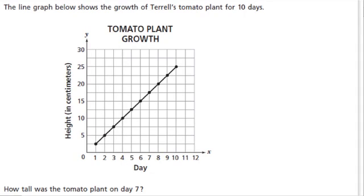In this problem we've got a line graph, which is a graph of data. These points represent the data, and the line connecting those points — that's why it's called a line graph — also shows the trend of what's happening. So here we notice as the days increase from 1 to 2 to 3 to 4 and so forth, the height in centimeters of the tomato plant is increasing as well.